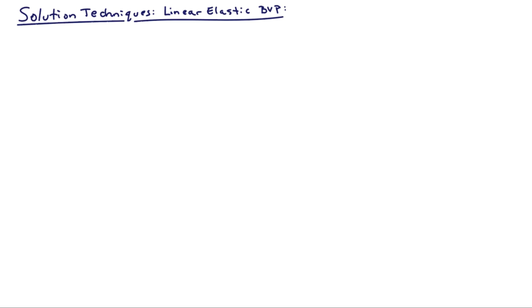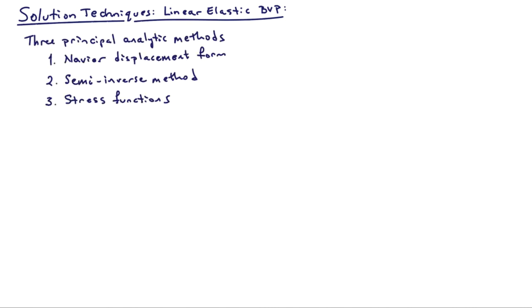When solving linear elastic boundary value problems by hand using analytical methods, there are three fundamental techniques that people use. One is known as the Navier form, or displacement form method. Another is called the semi-inverse method. And the third is through the use of stress functions. In this video, I'd like to go over the philosophy for each of these three techniques.